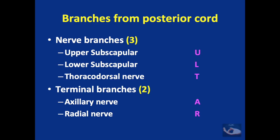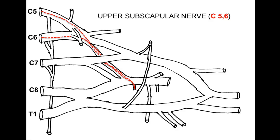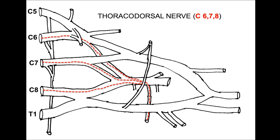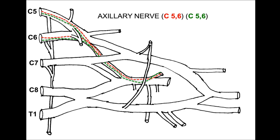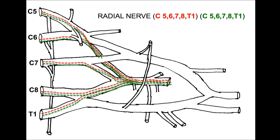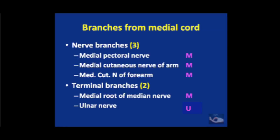From the posterior cord we have the upper subscapular, lower subscapular and thoracodorsal nerve as branches, and the terminal branches — the axillary nerve and the radial nerve — remembered by the mnemonic ULTAR. The upper subscapular nerve, lower subscapular nerve, and the thoracodorsal nerve supply the latissimus dorsi muscle. The axillary nerve supplies the deltoid and teres minor and sensation on the lateral aspect of the upper arm. The radial nerve receives both motor and sensory fibers from C5, C6, C7, C8 and T1. From the medial cord we have the three M's: medial pectoral nerve, medial cutaneous nerve of the arm, and medial cutaneous nerve of the forearm, plus two terminal branches — the medial root of the median nerve and the ulnar nerve.